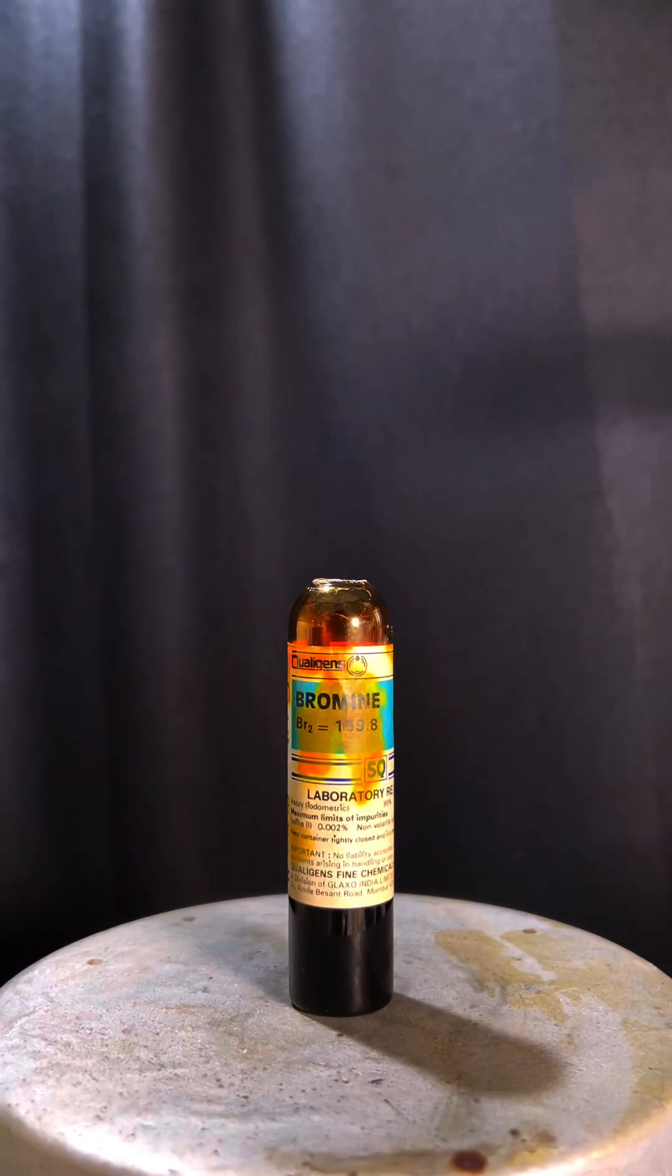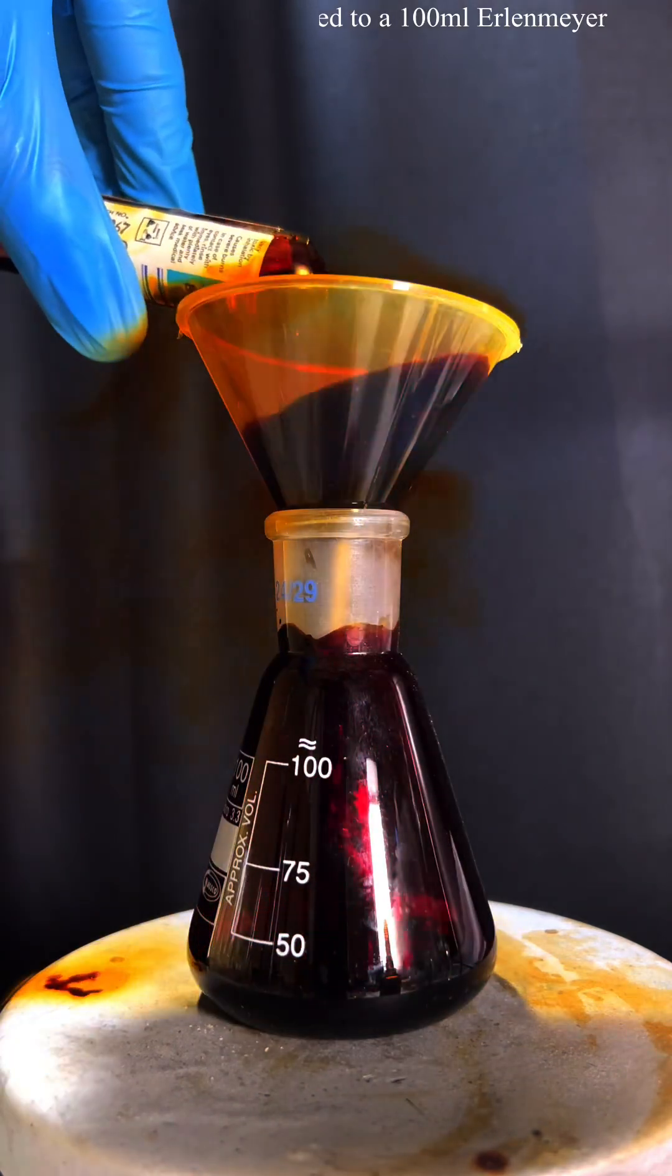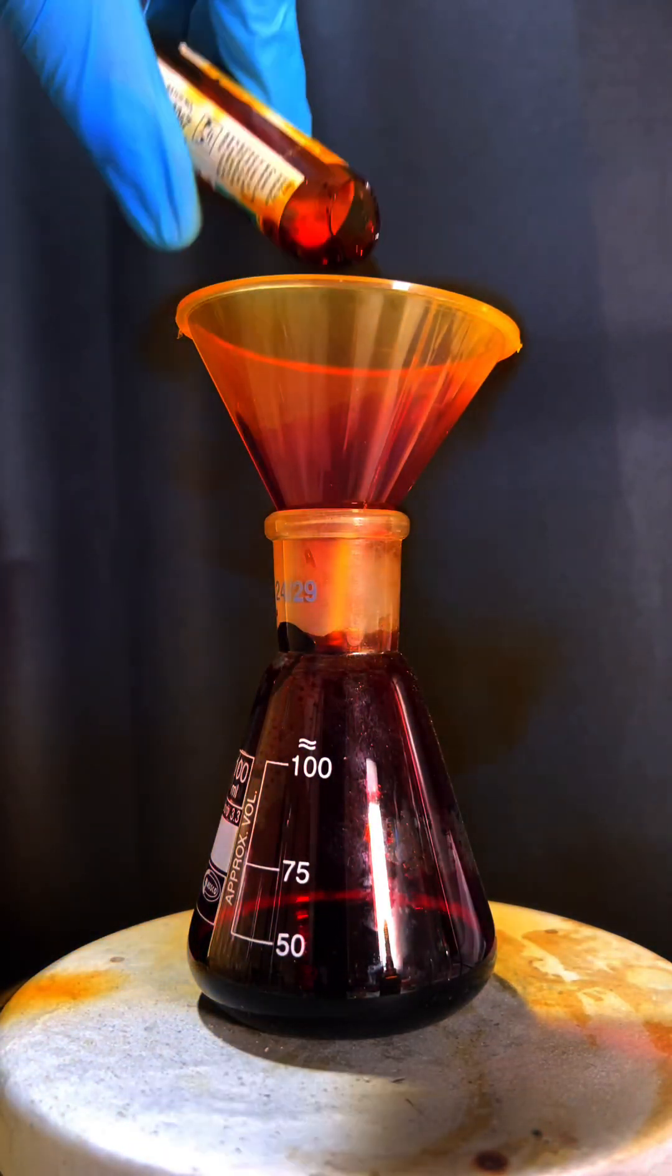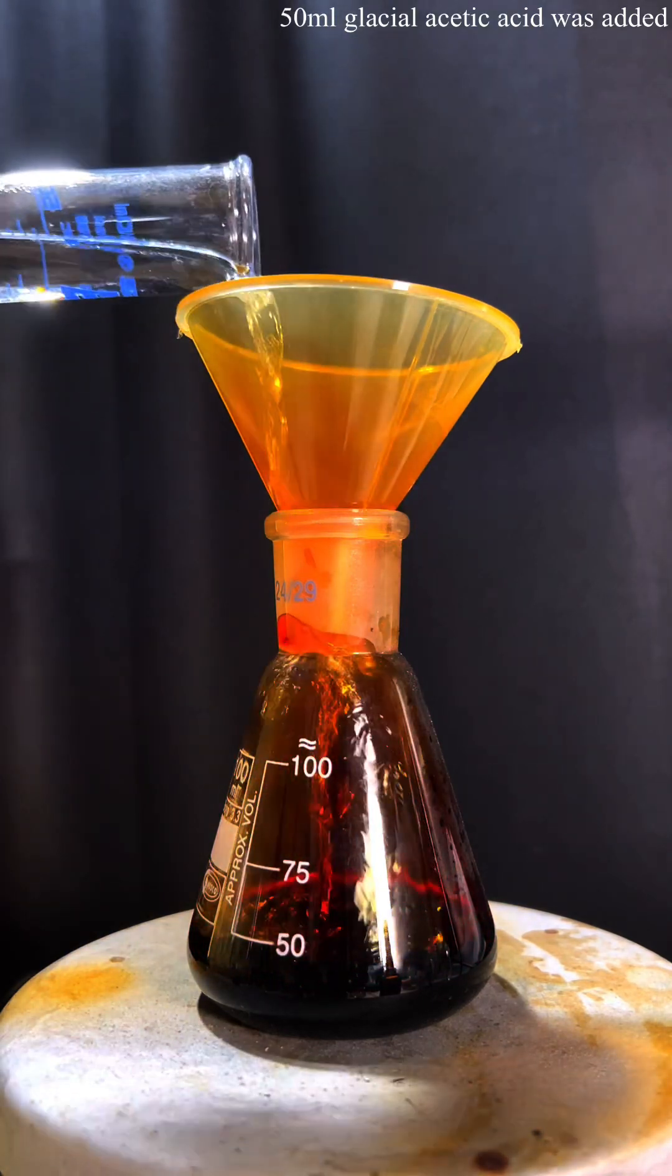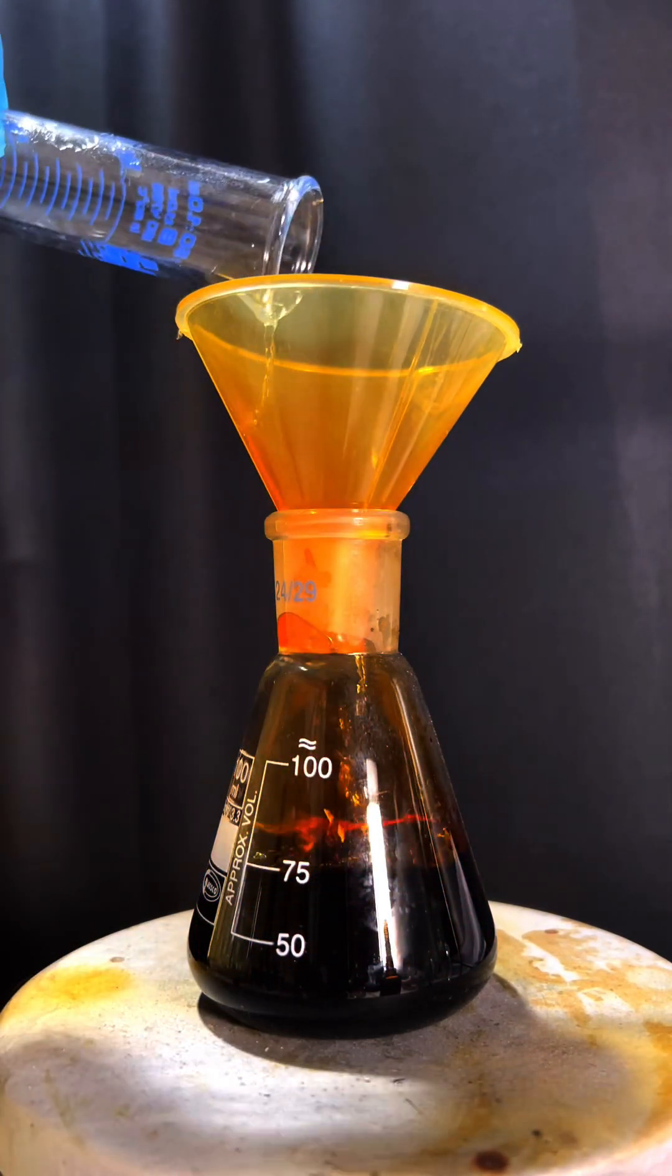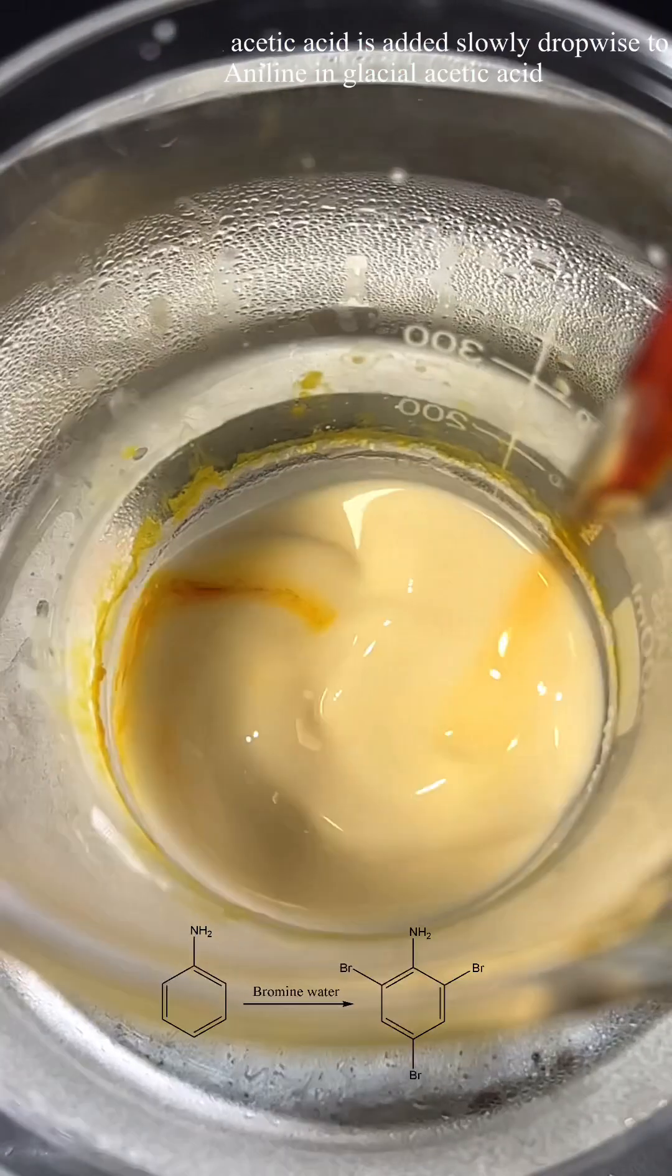Next, 20 ml of bromine was taken and transferred to a 100 ml Erlenmeyer flask. Then 50 ml glacial acetic acid was added to the bromine. The bromine in glacial acetic acid was then transferred to a separatory funnel and was added drop-wise to the aniline in glacial acetic acid.